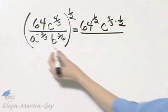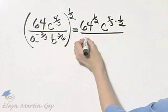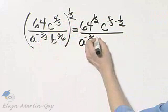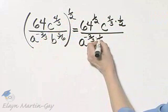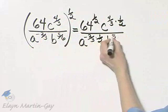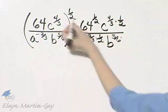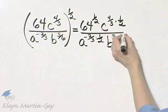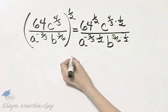In the denominator, that's a to the negative 2 thirds power raised to this power. So I will also multiply exponents. And then b to the 5 sixth power raised to the 1 half power. Again, that means I multiply exponents.